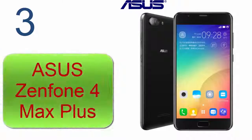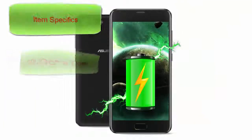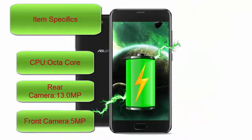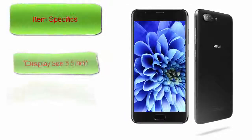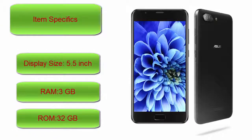Here is product number 3: ASU ZOOPHONE 4 Max Plus. Item specifics — CPU: Quad Core, Rear Camera: 13MP, Front Camera: 5MP, Display Size: 5.5 inch, RAM: 3GB, ROM: 32GB.